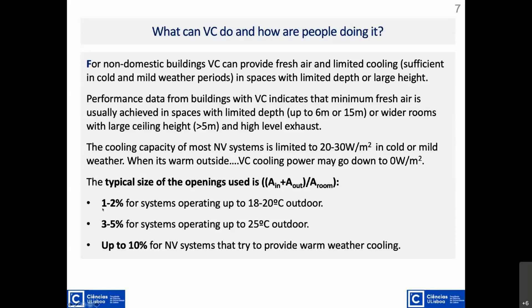There are three ranges found in designs and regulations. For winter and indoor air quality: 1–2% window open area scaled by room floor. For mild outdoor environments with some cooling: 3–5%, which can provide cooling up to 25°C outdoors. For maximum cooling capability: up to 10%. Note that this applies to buildings with internal loads of 20–30 W/m². If loads are higher, ventilative cooling often doesn't work. We must also be careful not to transform a building into an outdoor space by opening windows so much that it loses its function as a sheltered place.